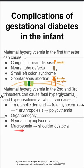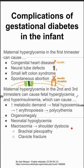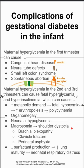Baby can become macrosomic — a big baby — which can lead to shoulder dystocia. Downstream effects of this include clavicle fracture, brachial plexopathy, and perinatal asphyxia.